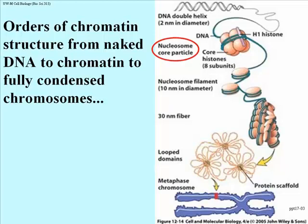The double helix first associates with proteins called histones. It wraps itself around histones — a core of 8 of them plus H1, another histone, so 9 histones total. These form structures visible in the electron microscope called nucleosomes.